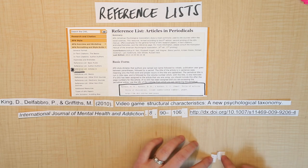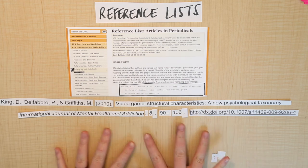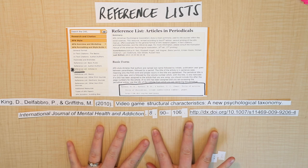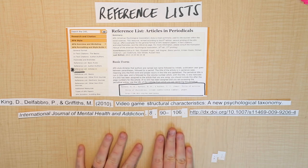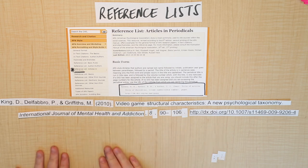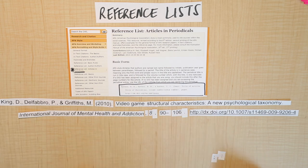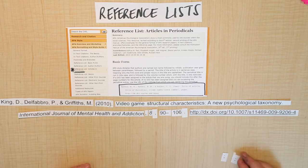What we're going to do now is go back to the computer and I'll show you how to take this from your reference list and turn it into an in-text citation when you're actually writing the paper — the actual body of the essay itself.